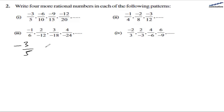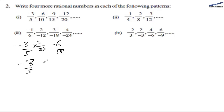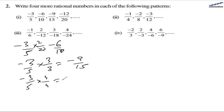We have -3/5 as the first number, then -6/10. As you can see, it is multiplying by 2 and 2. When you multiply both numerator and denominator by 2 you get -6/10. Likewise, multiplying -3/5 by 3 and 3 gives -9/15, and multiplying by 4 and 4 gives -12/20. So the pattern we are following is 2/2, 3/3, 4/4.